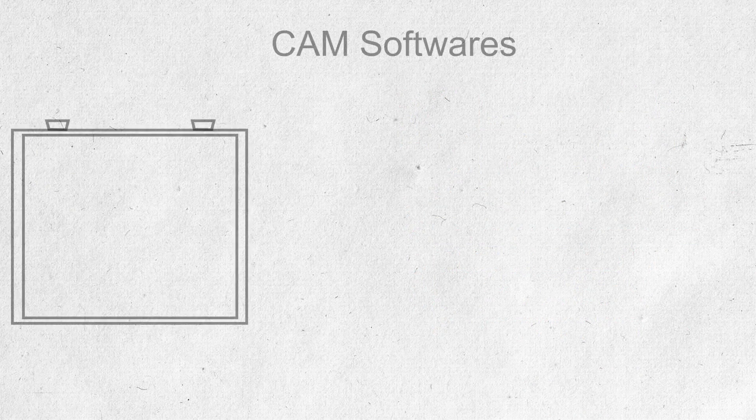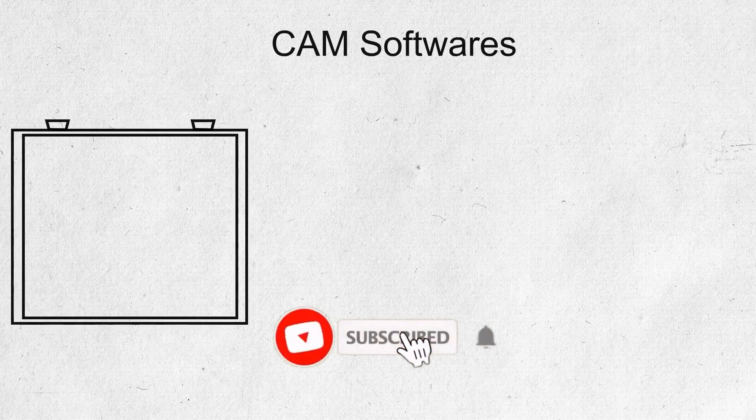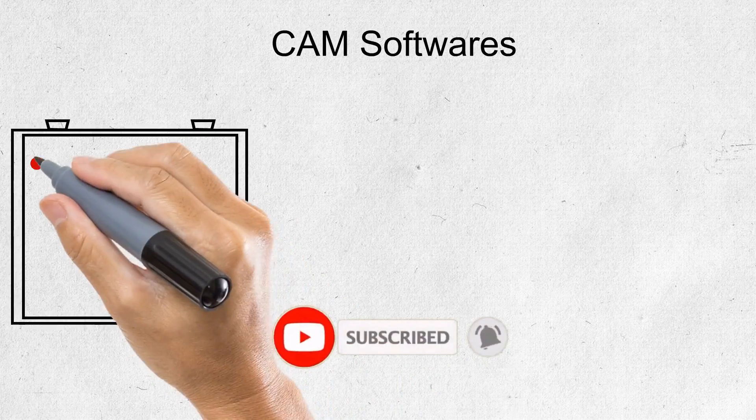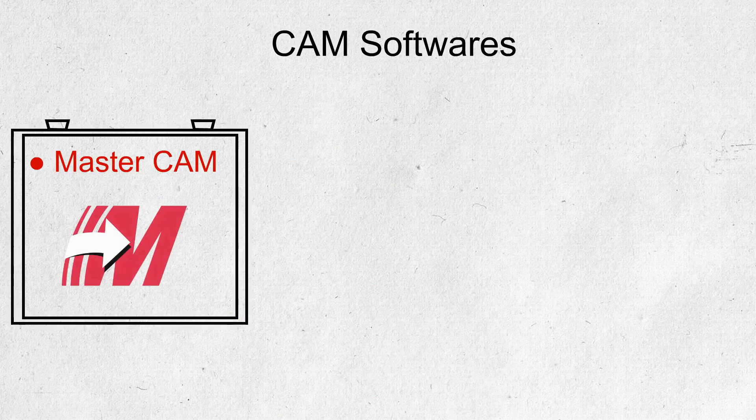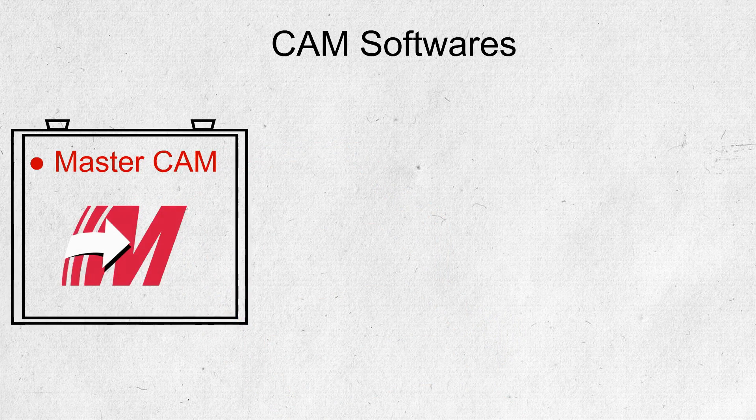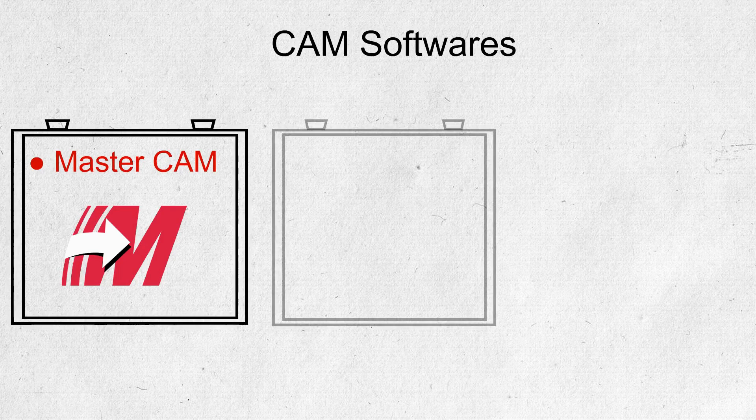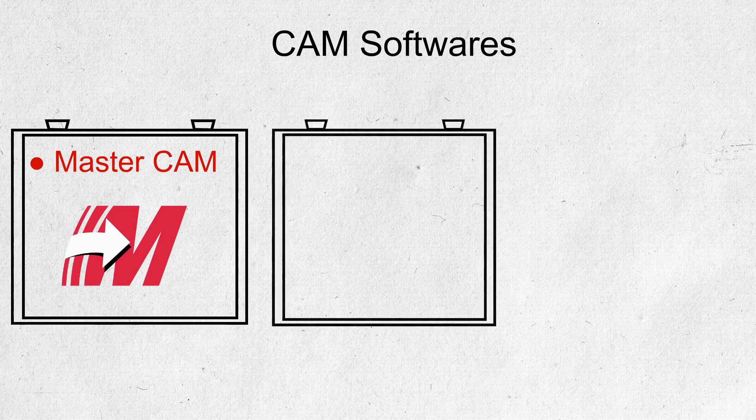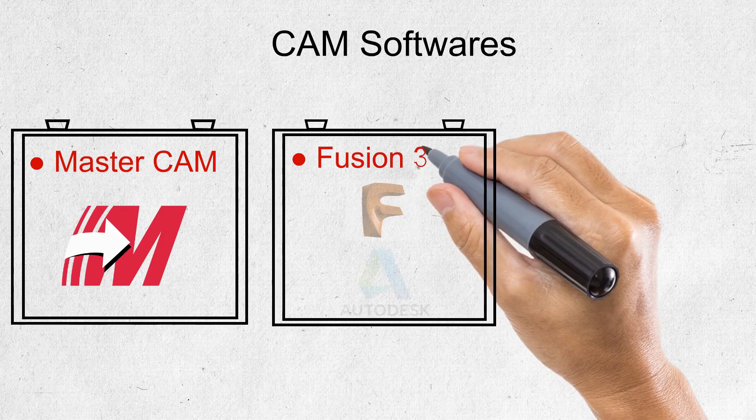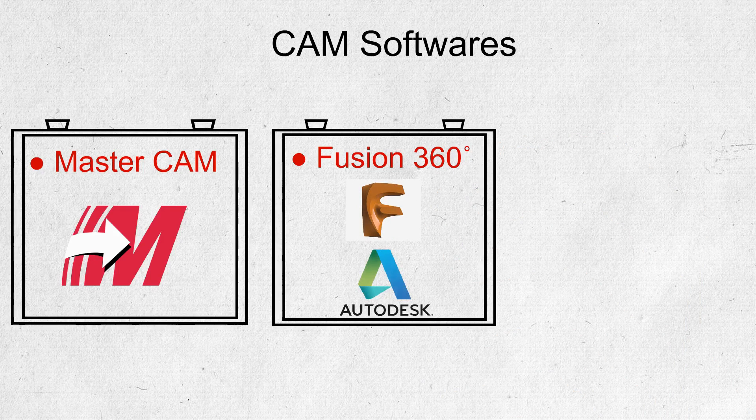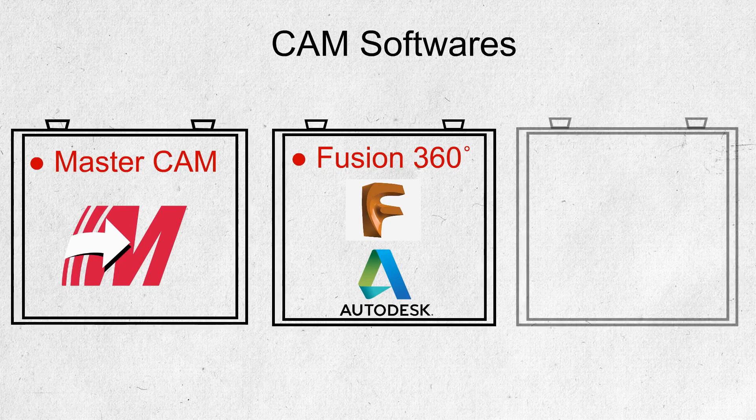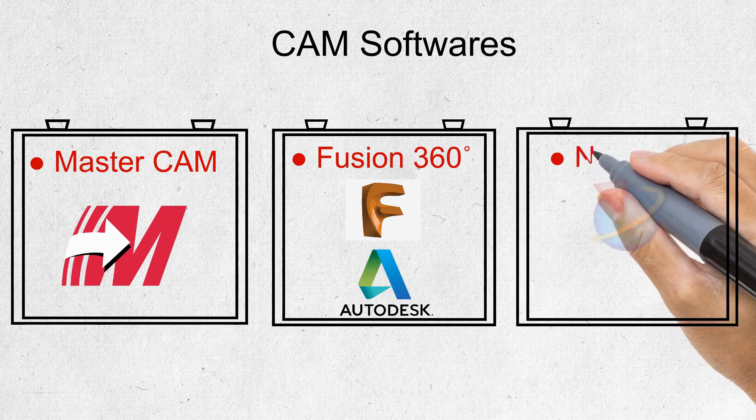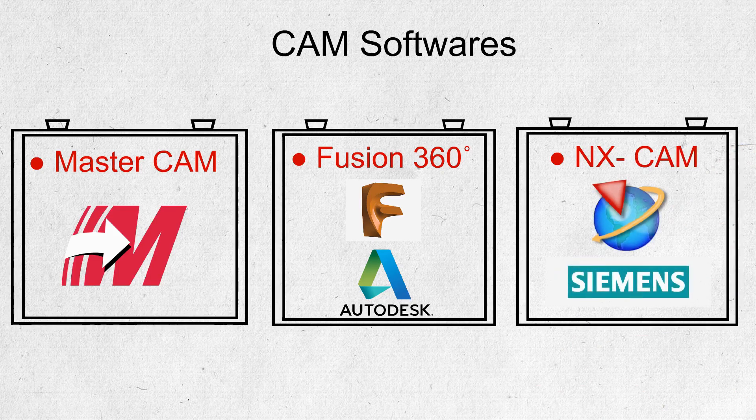What are the few software available in CAM? First is Master CAM, which allows for quicker modifications to making the part on the CNC machine. Next is Fusion 360, developed by Autodesk, which works simultaneously on 5 axes for manufacturing processes. And finally, NX CAM, developed by Siemens.